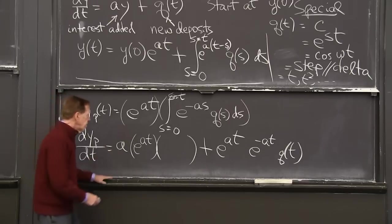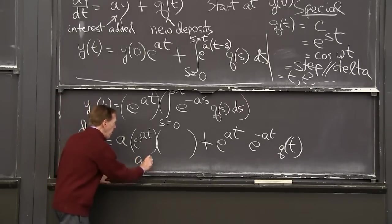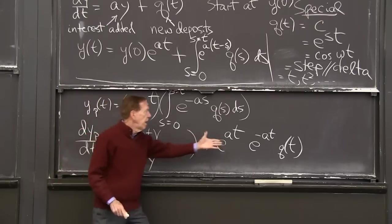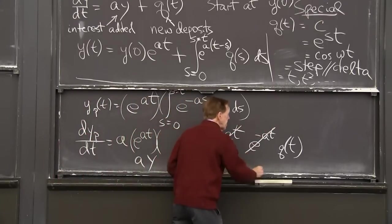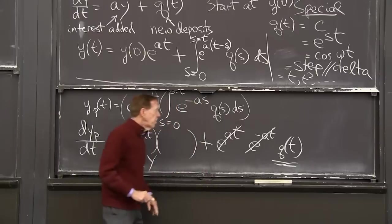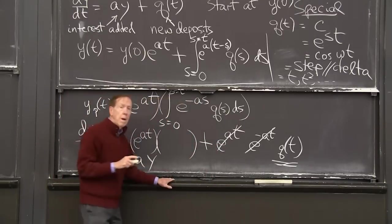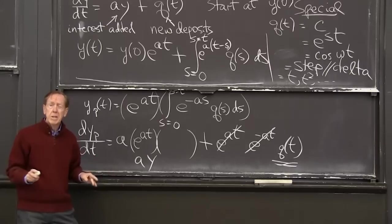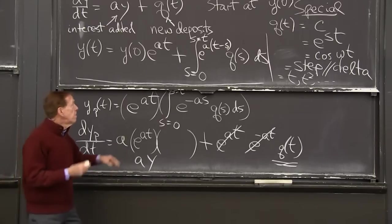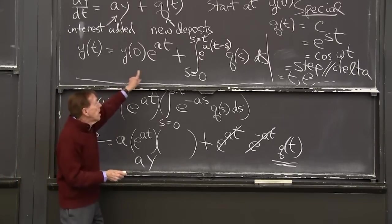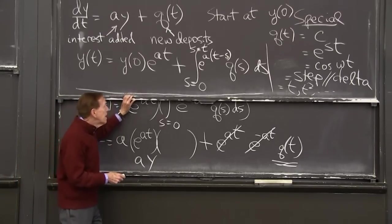That's the second term from the product rule. And OK, this was the a y. Perfectly. And what do I have here? e to the a t cancels e to the minus a t. And it's the source term q of t. So I have a y plus q of t, the correct right hand side for the differential equation. So this, that formula, let me bring it down once more,